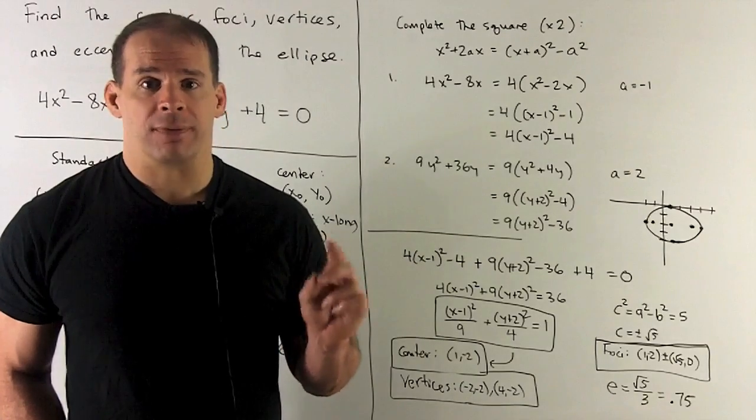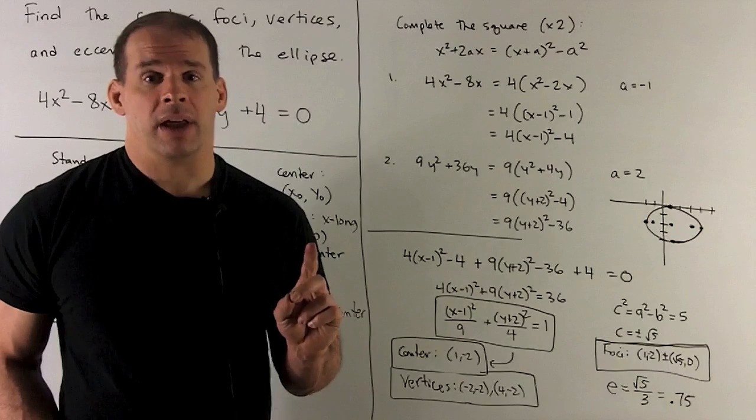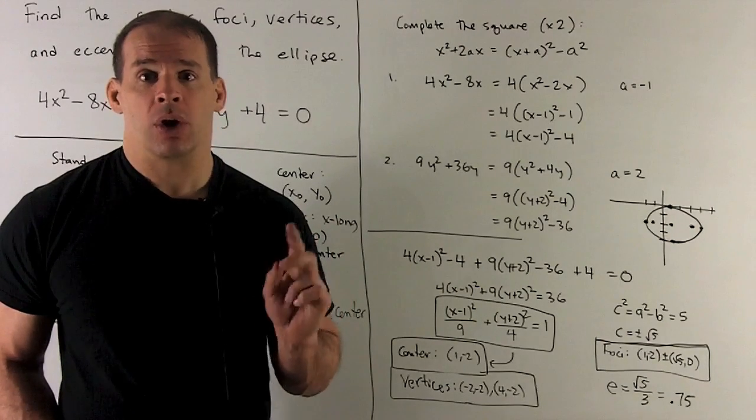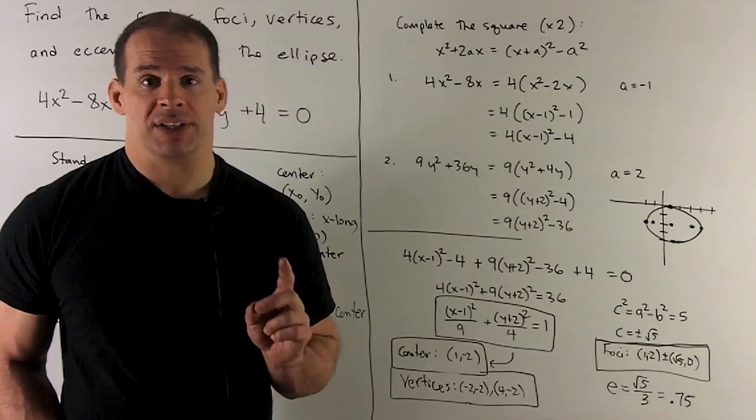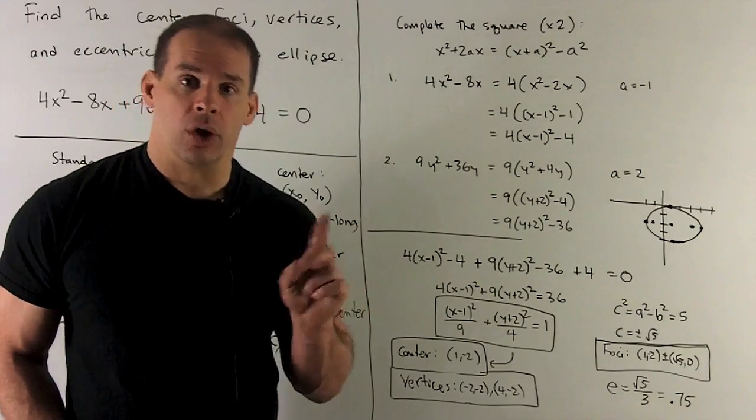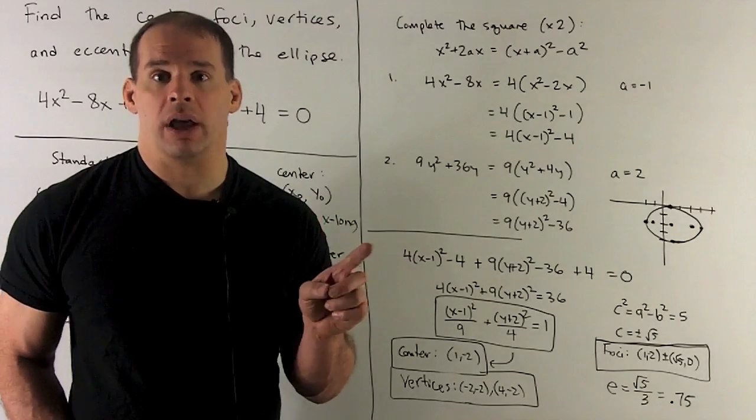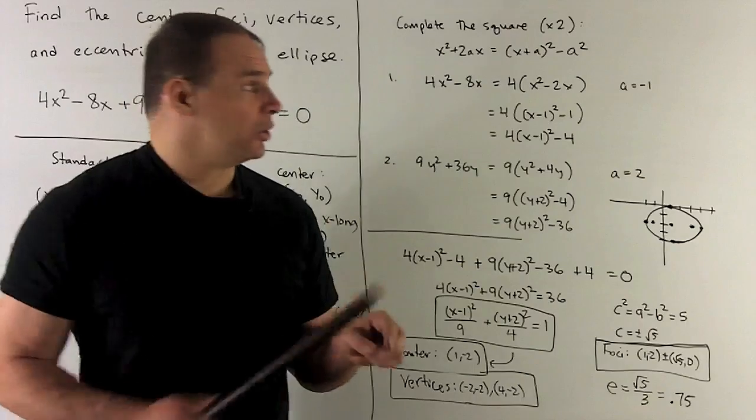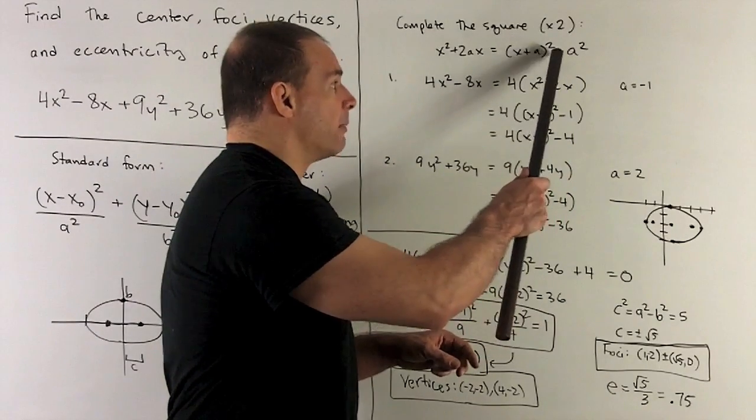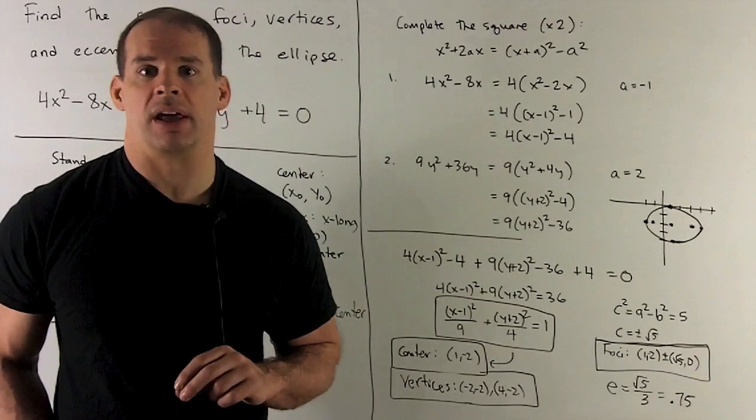For my first expression, I have 4x² - 8x. I factor the 4 out, and then in what's left over, we'll have 2a = -2 or a = -1. So, the new expression is (x - 1)² - 1. Note, a = -1. So, when I square it, I get a 1, and then we do -1. It doesn't matter what goes in for your a². It's always going to have a minus sign out in front.